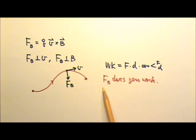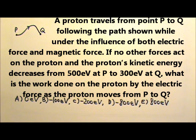Since the magnetic force cannot do any work on the moving proton, the work must be done by the electric force. The kinetic energy of the proton decreases from 500 eV to 300 eV. The work must be negative 200 eV. The electric force takes 200 eV of energy away from the proton, so the answer is negative 200 eV, C.